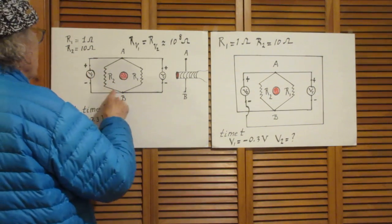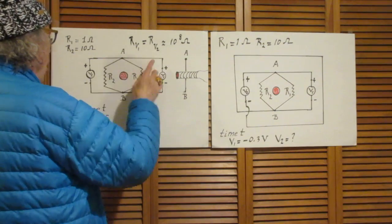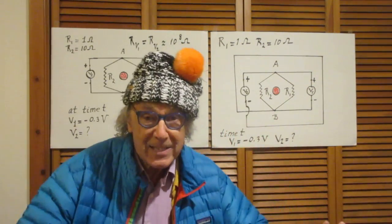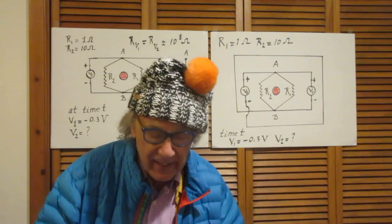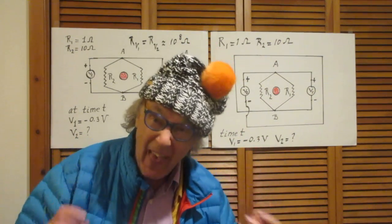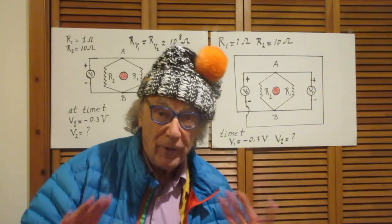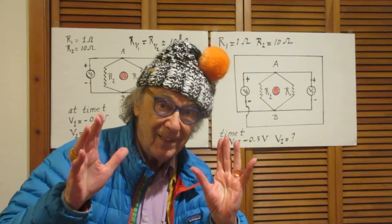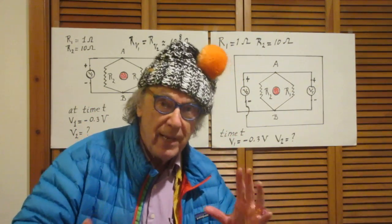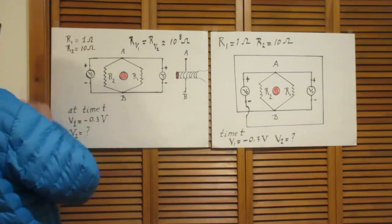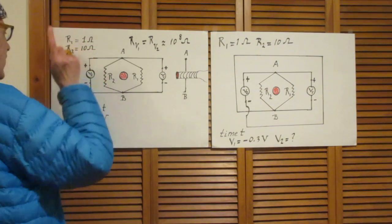All wires that you see, which are those straight lines, all of them, have totally negligible resistances. These are copper wires. Their resistances are probably way less than one tenth of a thousand of an ohm. So forget them completely. They can absolutely be ignored when you think about the fact that R1 is 1 ohm and R2 is 10 ohm.